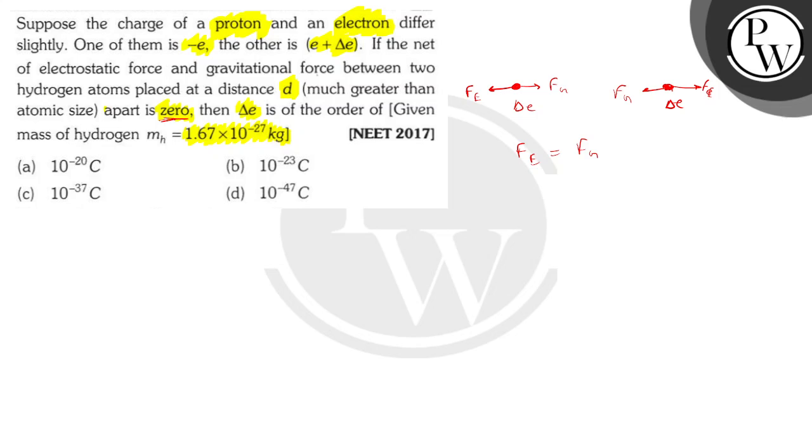Now, we know the formula for electrostatic force. The gravitational force is going to be Gm²/r². And for the electrostatic force, it's going to be kQ₁Q₂/r².